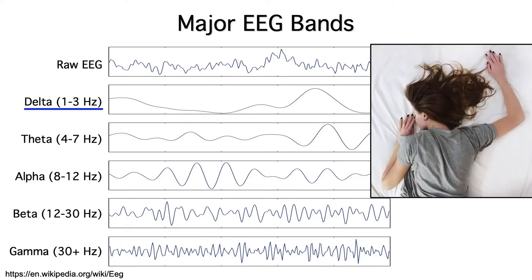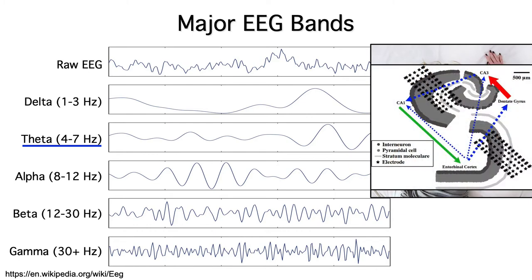You mainly see delta band oscillations when someone is asleep. In fact, these are the slow waves that give slow wave sleep its name. Theta band oscillations are prominent in microelectrode recordings from the hippocampus in animals, but you can't see hippocampal theta on the scalp. However, you can see theta band oscillations that are generated in neocortical areas, such as the prefrontal cortex.